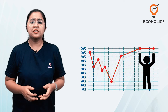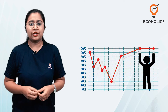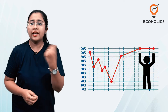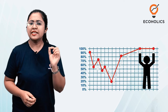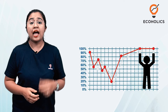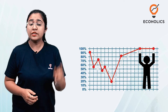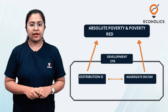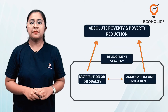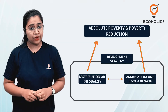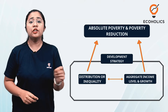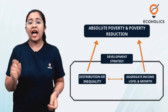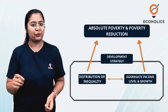We often hear the term trickle-down economics — the idea that economic growth within an economy is the best way to reduce poverty and benefit those at the bottom. The Poverty Growth Inequality Triangle model has been made to create poverty reduction strategies that include both steps to reduce inequality and stimulate growth.